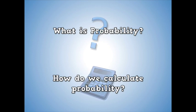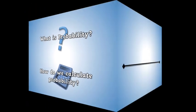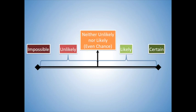We can think of probability as a line, a line that ranges from impossible to certain and a range of possibilities in between. We have unlikely things, we have likely things, and in the middle of those we have neither unlikely nor likely, sometimes called even chance. But what do these terms mean? Well, let's take a look at a few examples.